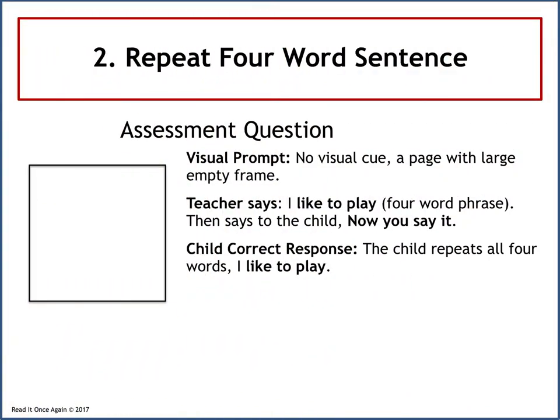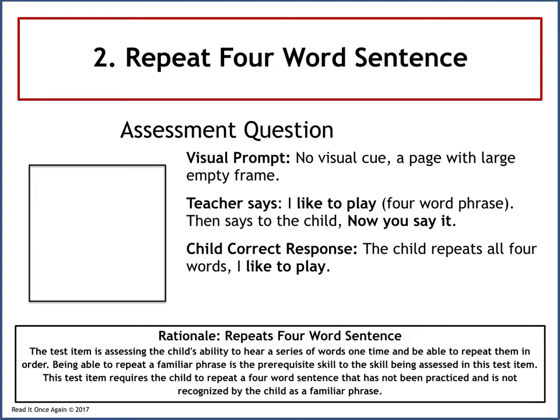The second skill assessed in the curriculum-based assessment is to repeat a four-word sentence. The child will see no visual cue on the page facing them, only a large empty frame. The assessor says: I like to play. Then says to the child: now you say it. The child's correct response is to repeat all four words — I like to play. This test item assesses the child's ability to hear a series of words one time and be able to repeat them in order. Being able to repeat a familiar phrase is a prerequisite skill. This test item requires the child to repeat a four-word sentence that has not been practiced and is not recognized as a familiar phrase.